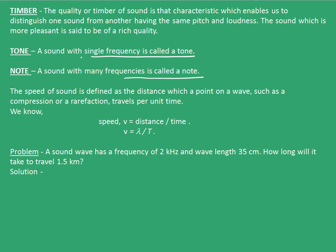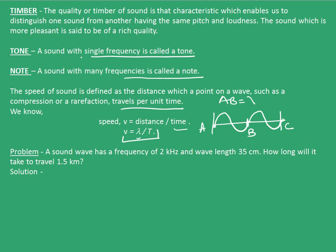The speed of sound is defined as the distance which a point on a wave, such as a compression or a rarefaction, travels per unit time. Speed is distance divided by time, and the distance here is nothing but the wavelength of the sound wave. Therefore, speed is wavelength upon the time period of the sound wave. Wavelength is one complete cycle of the sound wave. In the figure I have drawn two wavelengths — from point A to point B, and from point B to point C. AB corresponds to one wavelength λ, which is equal to BC.